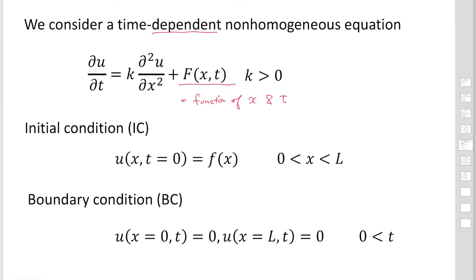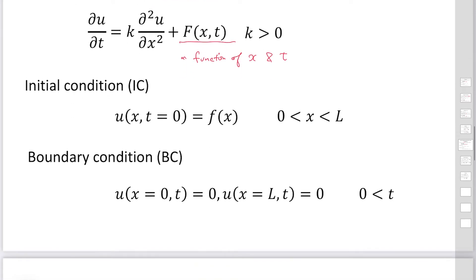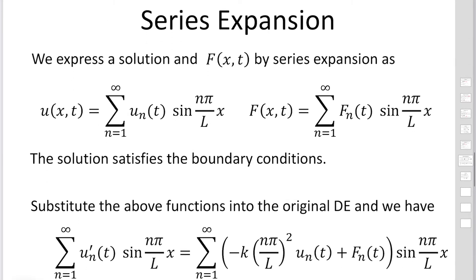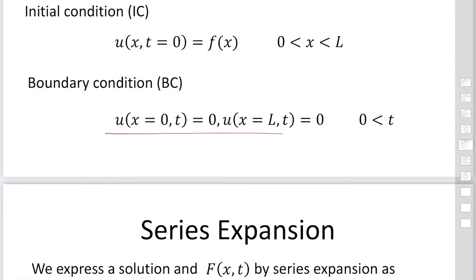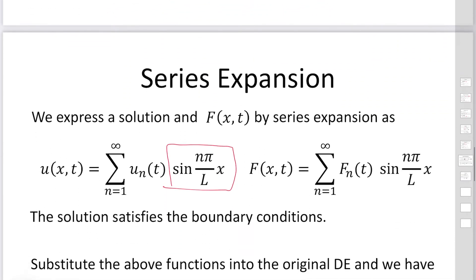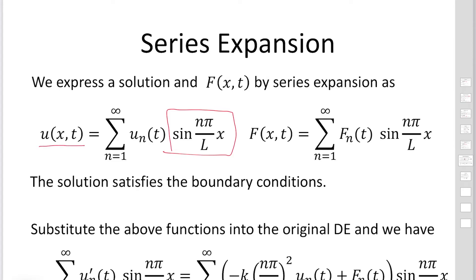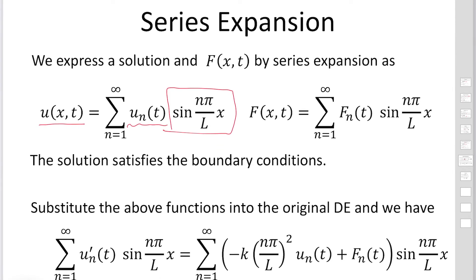The initial condition is u equals F(x), and the boundary conditions are zero at both boundaries. To solve this equation, we express both u and F as series expansions of sine functions — specifically sine(n pi over L times x) — which automatically satisfies the boundary conditions. The coefficient U sub n is a function of t, and similarly, F is expanded with coefficients f sub n as functions of t.